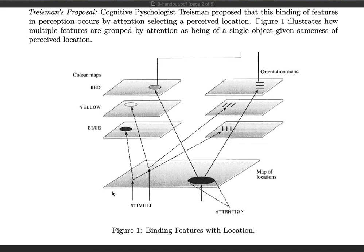For example, on your map of locations there is the color red and an orientation of facing away from you at the same location. When your attention focuses on that location, it binds those two features together, so you perceive a red object facing away from you — say, a toy car that is red and you're looking at it from behind. This is the model of how attention works and how it binds together different features detected in perception.